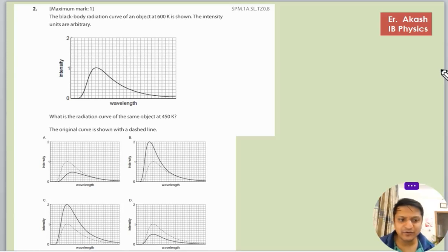There's another question and the question says that black body radiation curve of the object at 600 Kelvin is shown. So this graph is shown to us and 600 Kelvin is the temperature.